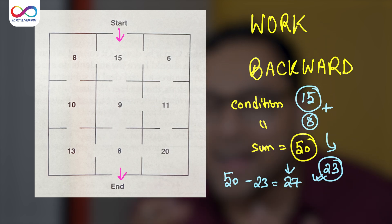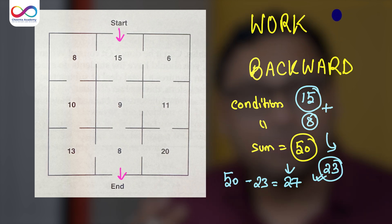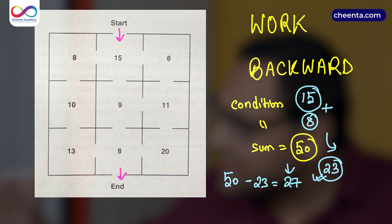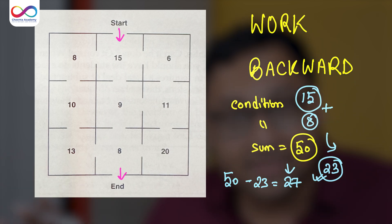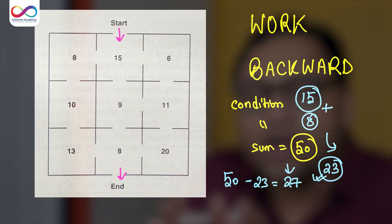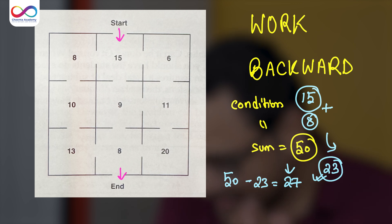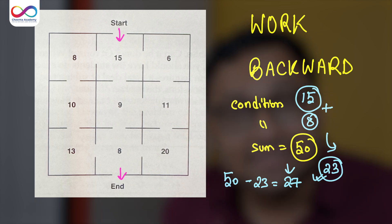I hope you're understanding what I mean by backtracking. I'm starting from 50 and sort of seeing how much I have already done, whichever path I take. And then I'm seeing, okay, this much is left. So how do I make 27?